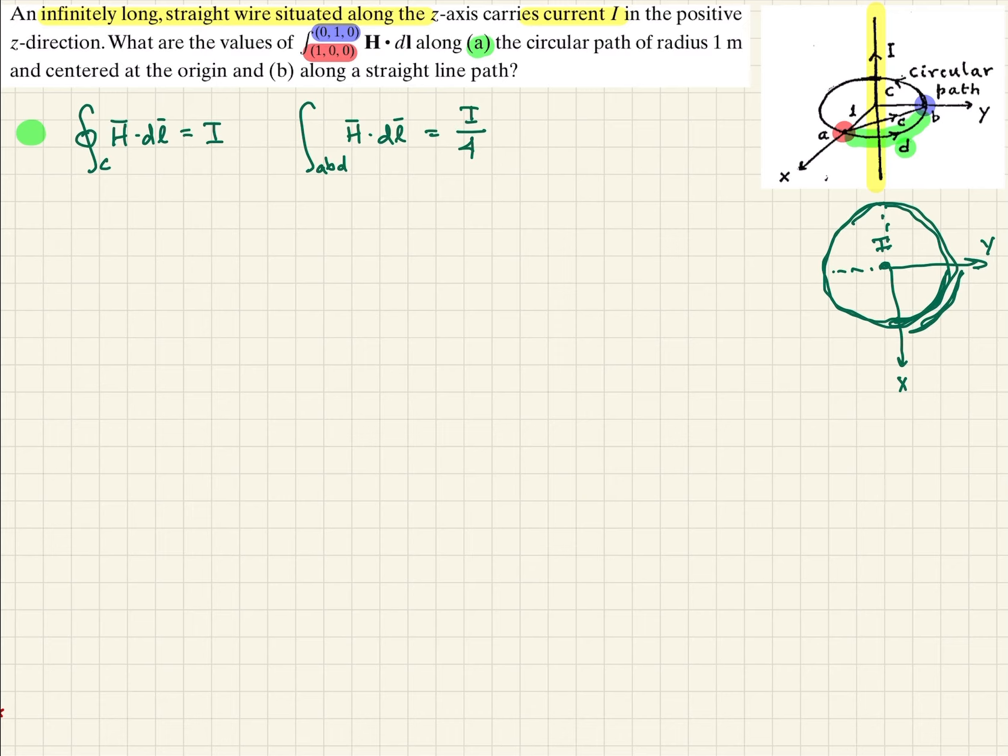Now we have another part, part B, which we'll put here. Now they're wanting us to consider the straight path. So going around the circle, what if we just do an integral along that line going directly from A to B?